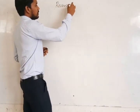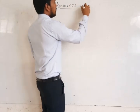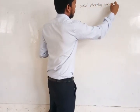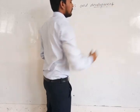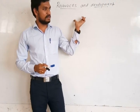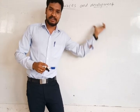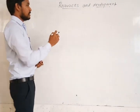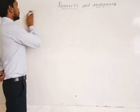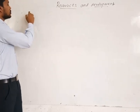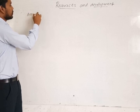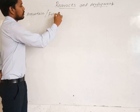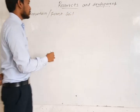Now we will go for the remaining two soils. Please don't forget about the ending of the chapter — when you remember the ending of the chapter, you can recall all other concepts. We will go for the mountain soil, otherwise called forest soil.